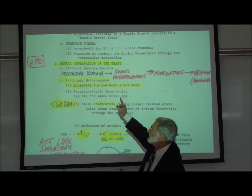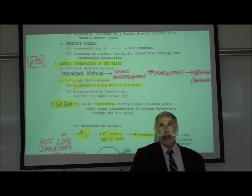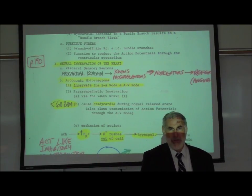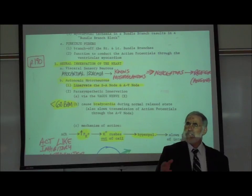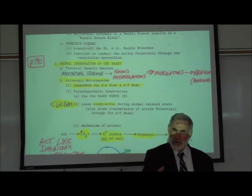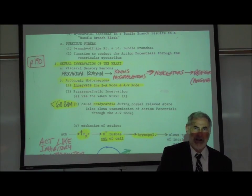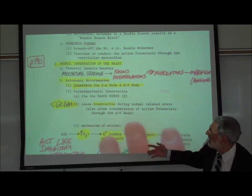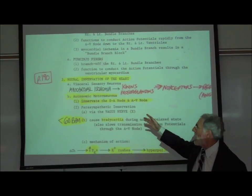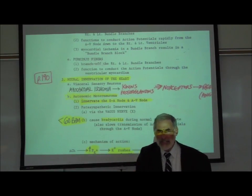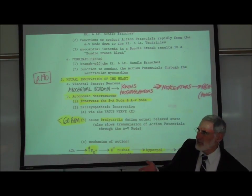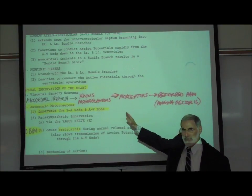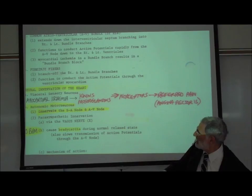We're on page 190 and we want to review, very briefly, the neural innervation of the heart. There are both sensory neurons and motor neurons associated with the heart. An example of a visceral sensory neuron associated with the heart are nociceptors — pain sensory neurons associated with the modality of pain.